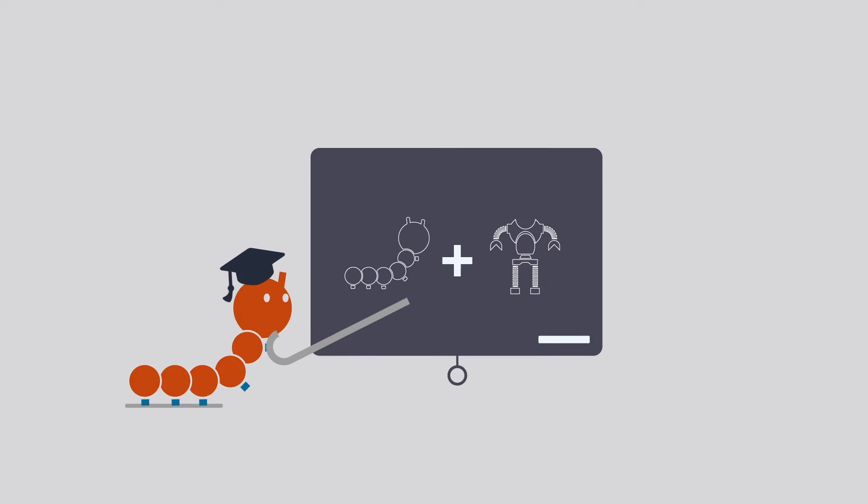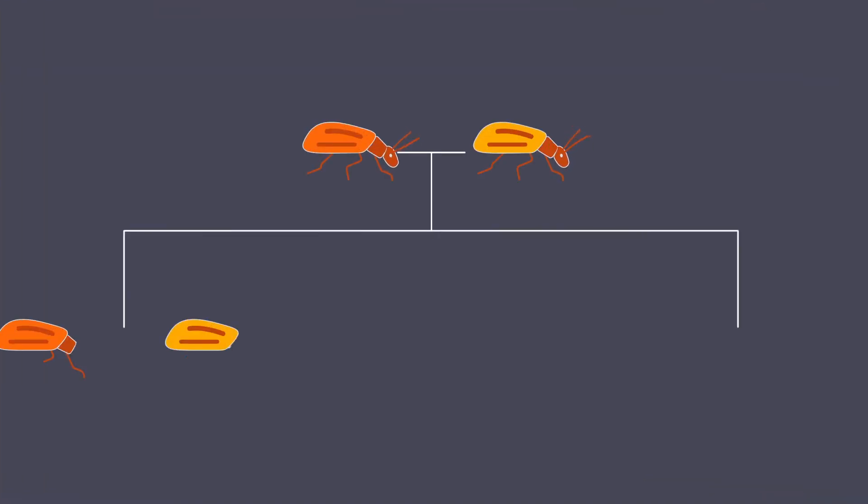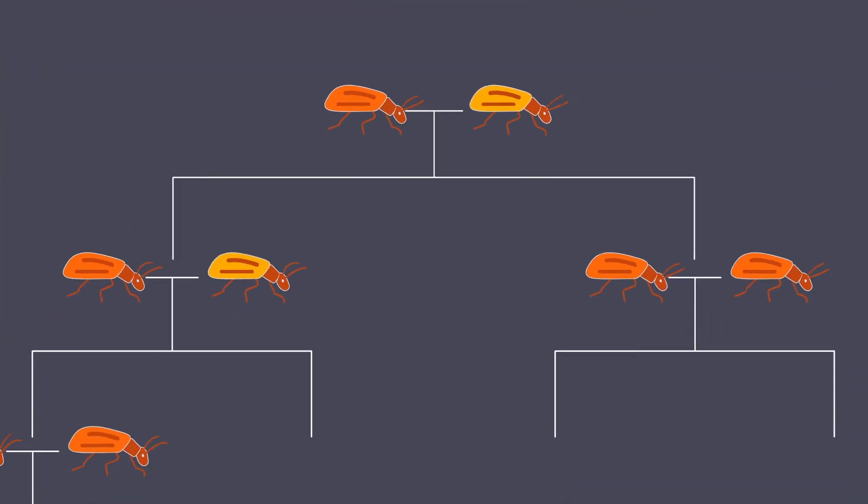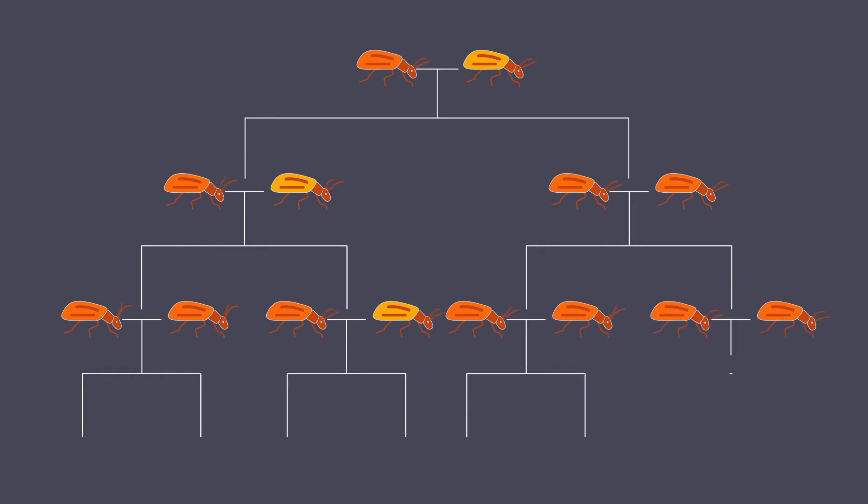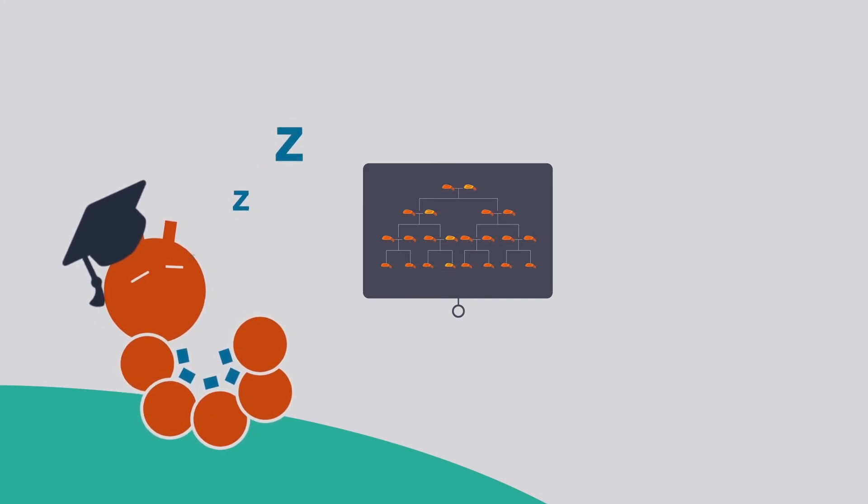But pests are constantly evolving. The most resistant specimens survive and pass on their genetic material to their offspring, which means the threat of attack is always there, with some pests even lying dormant and ready to strike again years later.